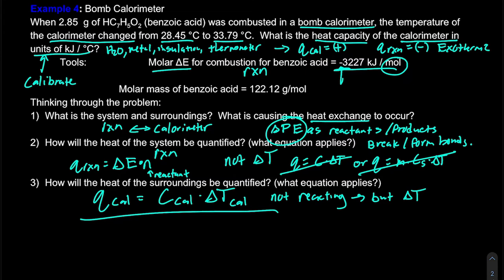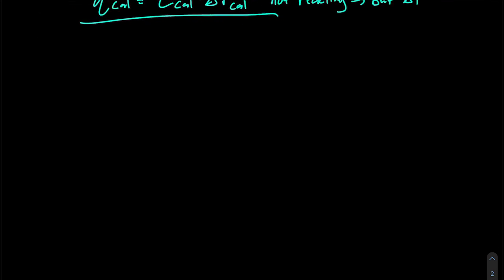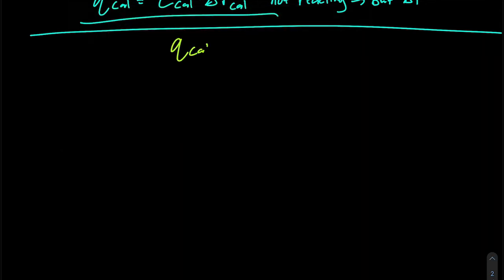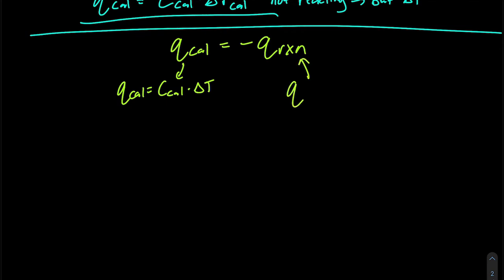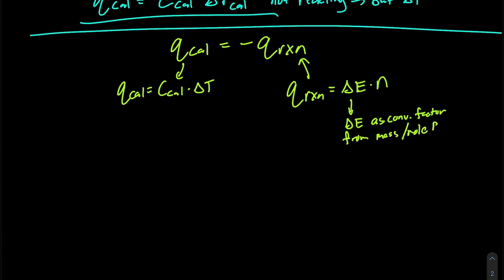Now that we have those groundworks established, let's think about how the heat released or absorbed by our reaction corresponds to our calorimeter. We start with the idea of heat transfer: Q_calorimeter is equal and opposite to Q_reaction. The Q_calorimeter is quantified as heat capacity of the calorimeter times delta T, and Q_reaction is quantified as delta E times the number of moles. We can also use our change in internal energy as a conversion factor from the mass of benzoic acid to heat.